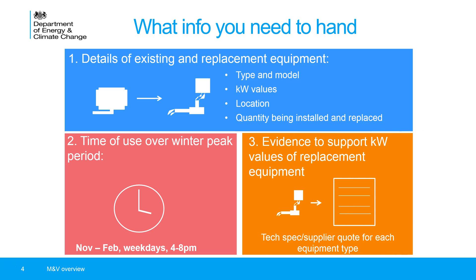Finally, you'll also need evidence to support the kilowatt values of the replacement equipment in your project — it's only the replacement equipment, you don't need to worry about evidence for existing equipment. In practice, you'll need to provide a technical specification or potentially a supplier quote to substantiate the kilowatt values of each replacement equipment type. For example, if you're installing 20 pumps of two different types, you'd need to provide technical specifications for those two pump types.